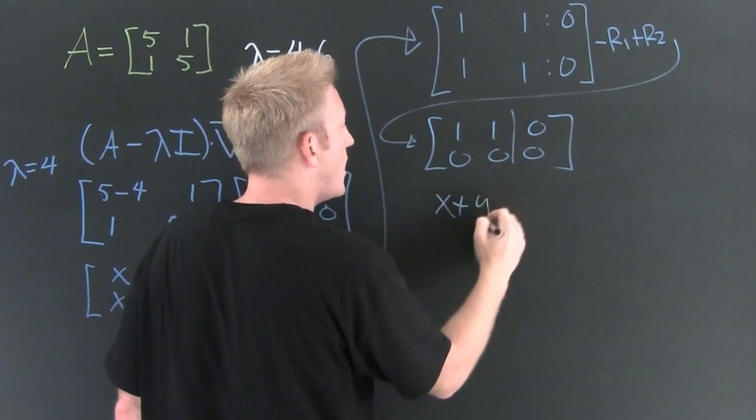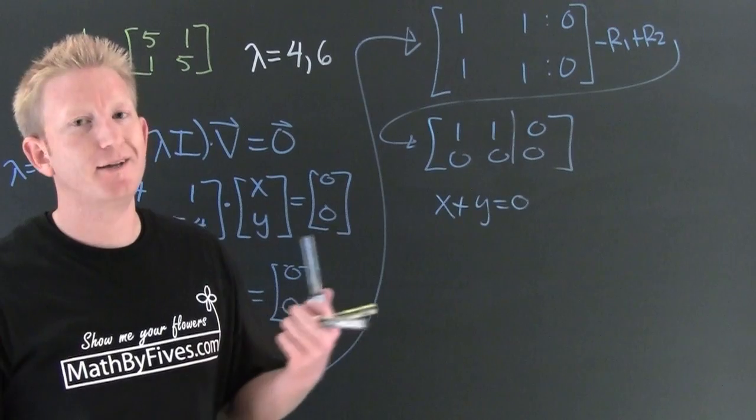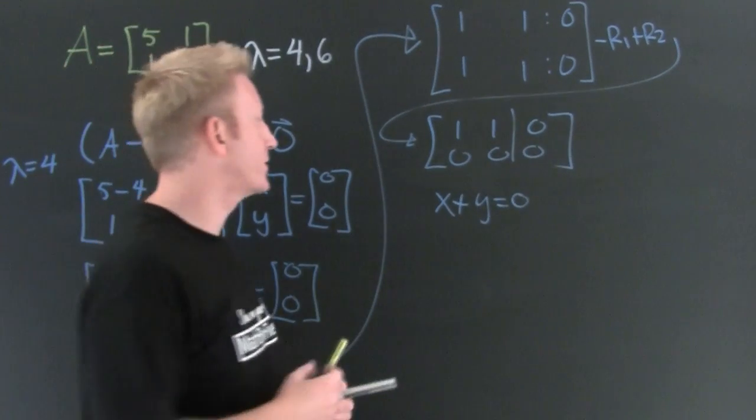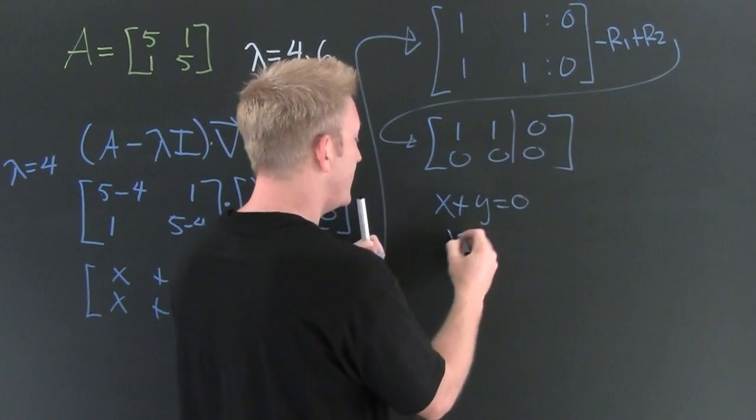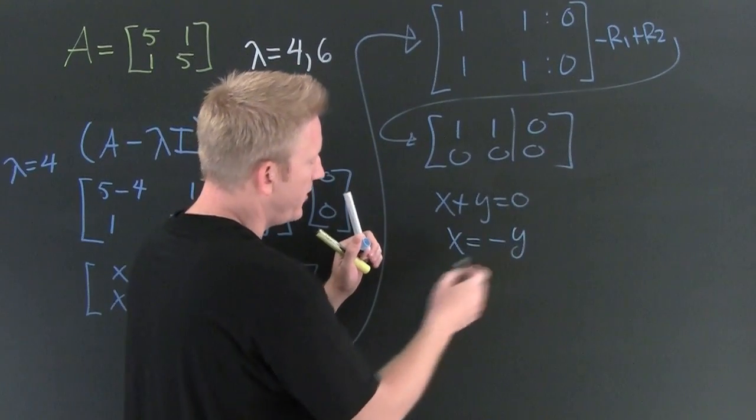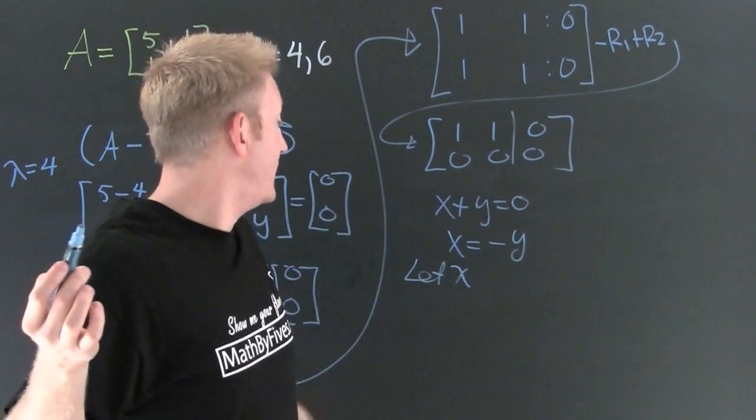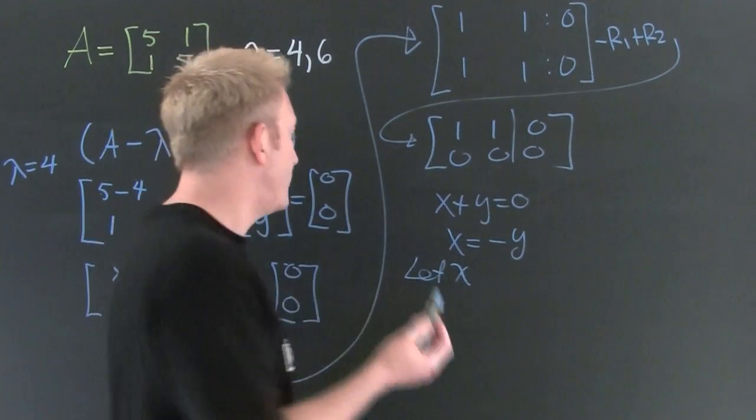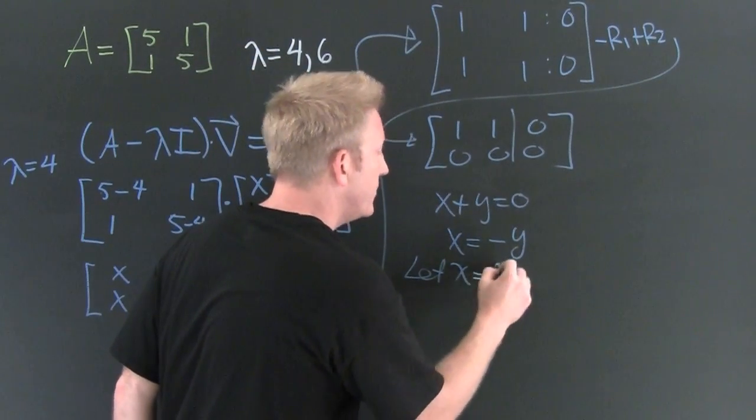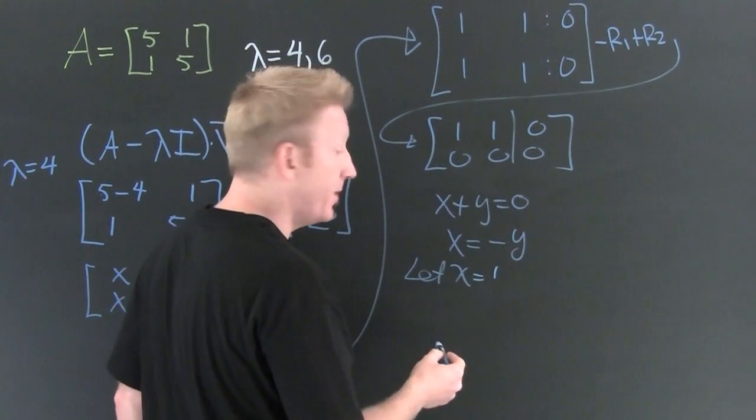So now what does this say? x plus y is equal to zero. Well we knew that originally, but here we're not skipping any steps and we're showing all the work. What does that say? x is equal to minus y. Alright, we'll let x be any number. Well you don't want it to be zero, but let's just let it be 1. If I throw that in there, then y is going to be minus 1.